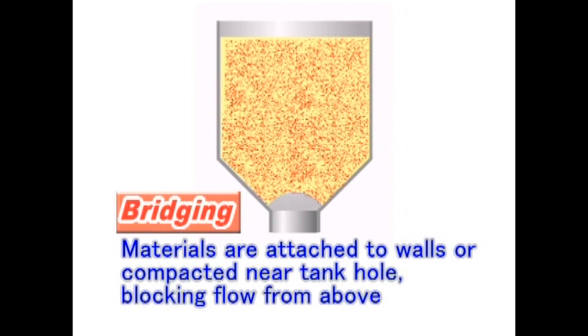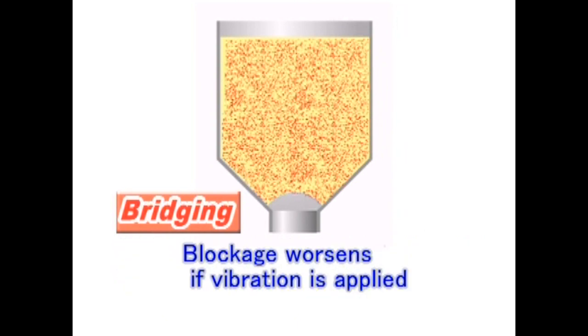Bridging is when deposits become attached to walls or compacted in the area around a tank's hole and block the flow of materials from above. This can happen easily in tanks with small holes, so the blockage will become worse if vibration or other means are applied.